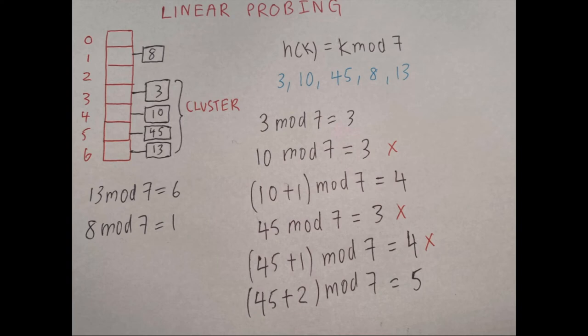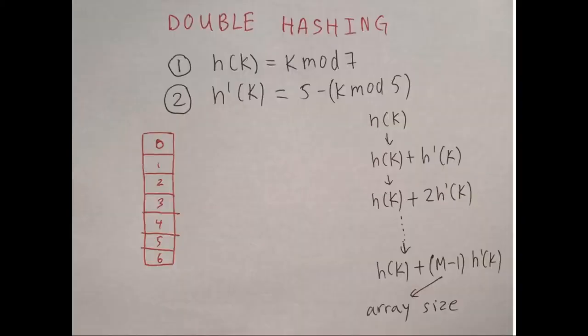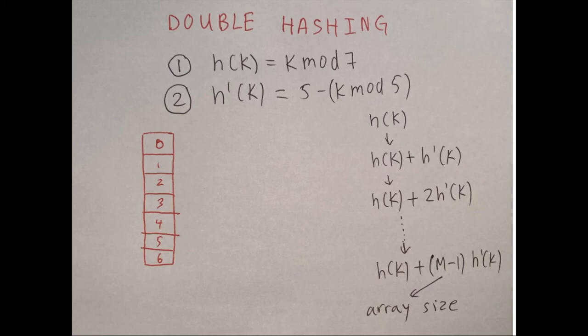One problem with linear probing is that we often get clusters, because we're simply adding 1 and modding by the same prime number. This can lead to big clusters of numbers next to each other. A solution is double hashing, which uses a primary hash function — h(k) = k mod 7 — and a secondary hash function: 5 minus k mod 5. Using a prime number yields fewer common factors, which means fewer collisions on average.